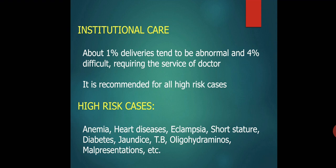Institutional care: about 1% of deliveries tend to be abnormal and 4% are difficult, requiring the service of a doctor. It is recommended for all high-risk cases such as anemia, heart disease, eclampsia, short stature, diabetes, jaundice, tuberculosis, oligohydramnios, malpresentations, etc.